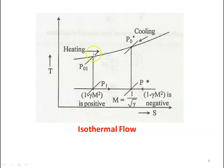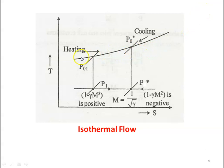For property calculation, at section 1 the property is P1, and at the choking condition it is P*. For P1 we calculate the stagnation pressure P_O1, and for P* we calculate the stagnation pressure P_O*. When it is a heating process, the direction is from the left extreme towards point 1; when there is a cooling process, it is from the right extreme towards point 1. These lines are the stagnation pressure lines in the isothermal flow temperature-entropy diagram.